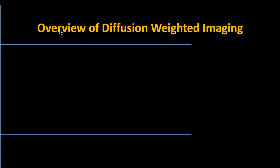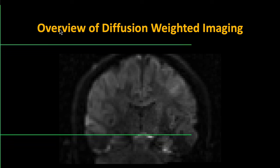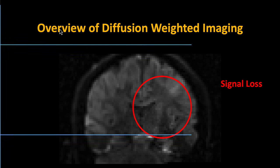With diffusion weighted imaging, we use a very similar concept. At first glance it may look like a T2 weighted image, and technically a certain category of diffusion weighted imaging is basically your typical T2 weighted functional image. But what we're interested in here isn't that typical blood oxygenation level dependent signal — instead, with diffusion weighted imaging we're trying to sensitize the data to signal loss, which may sound counterintuitive.